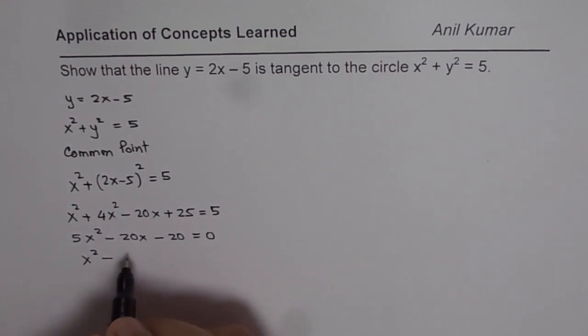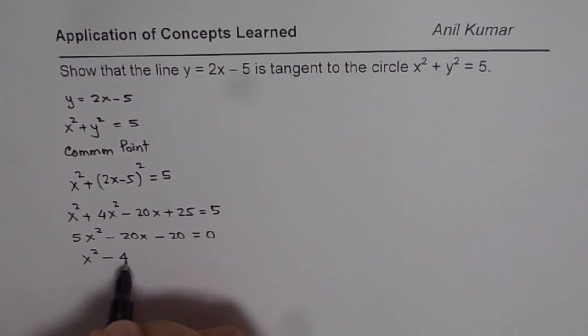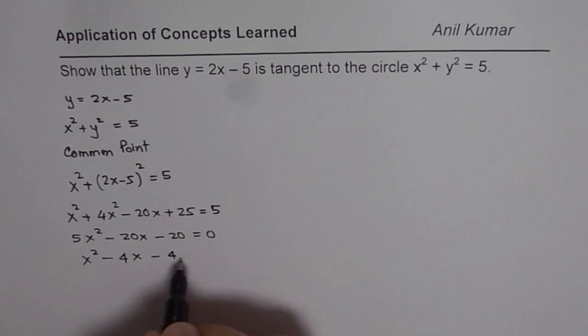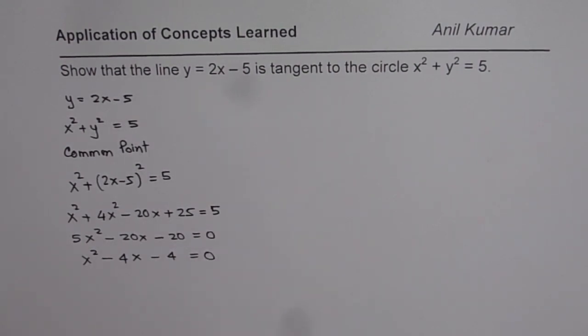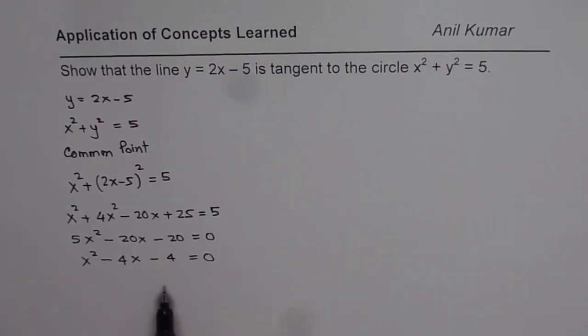Let us divide by 5. So we get x square minus 4x plus 4 equals 0. So at this particular thing, what we get is this quadratic equation.